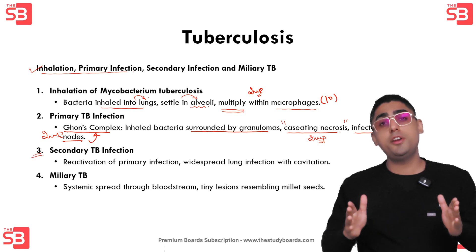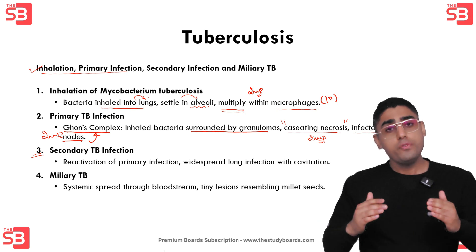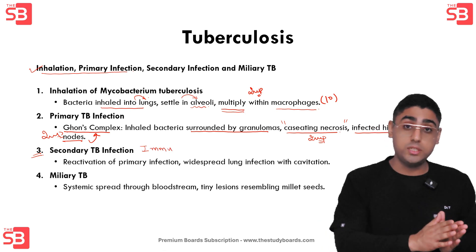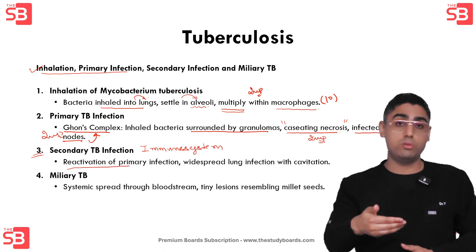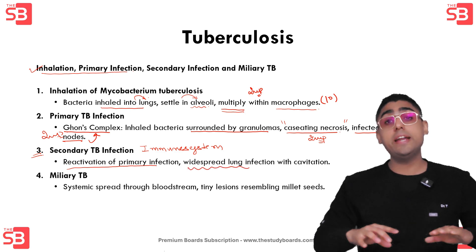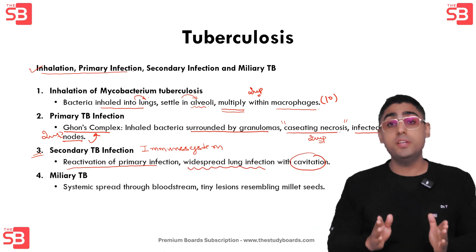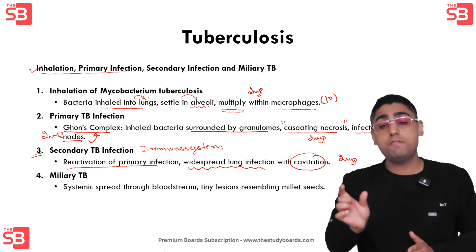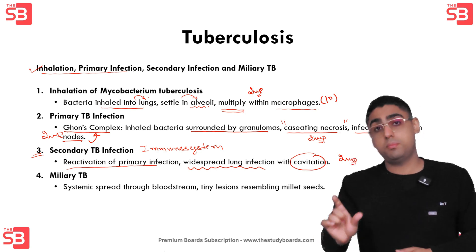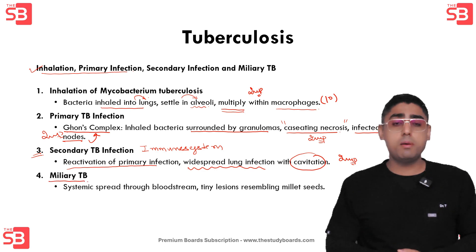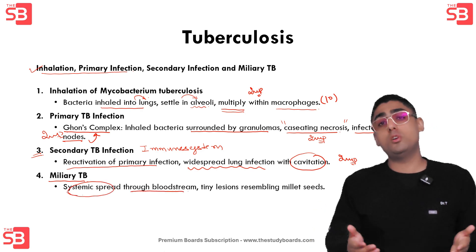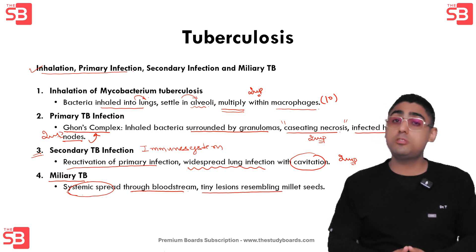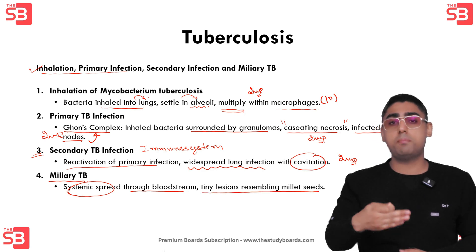If the immune system cannot control the primary infection, it can become reactivated later in life, leading to secondary tuberculosis. This results in a more widespread lung infection with cavitation — an important feature. Additionally, TB can spread through the bloodstream, leading to a systemic spread known as miliary tuberculosis, characterized by tiny lesions resembling millet seeds.